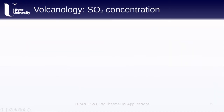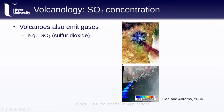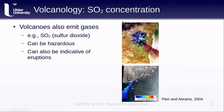In addition to lava, volcanoes also emit gases like sulfur dioxide, or SO2. We can see two examples here from the Pieri and Abrams paper: the first is a false color thermal infrared composite showing a sulfur dioxide plume highlighted in purple, and the second is an image showing an estimate of how much sulfur dioxide is present in that plume. For most life forms, sulfur dioxide can be quite hazardous to breathe, and it may also be indicative of increased activity and the potential for eruptions.